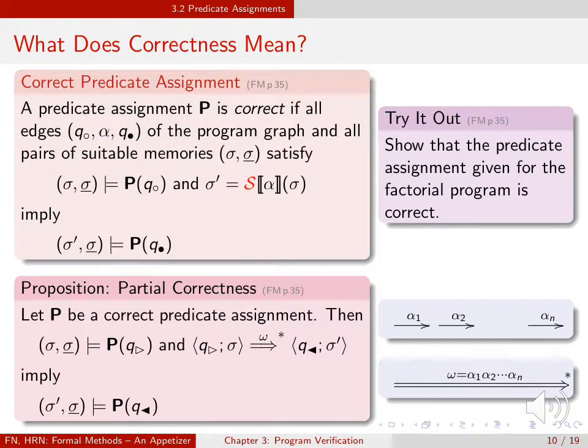Now you should take the time to check that the predicate assignment for factorial is indeed correct. Having done this, you should read the section in the book.